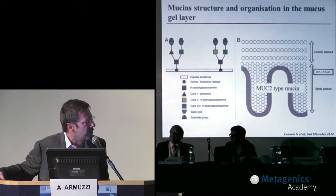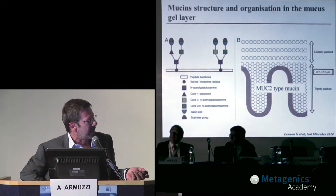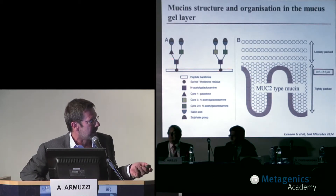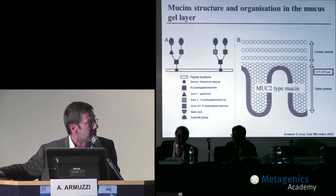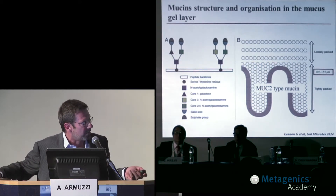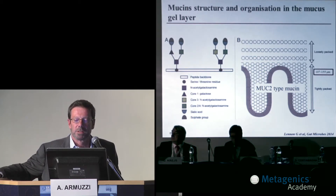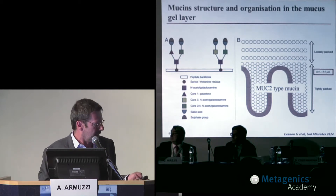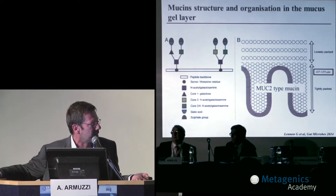The mucin molecule is a peptide backbone on which serine or threonine residues are inserted, and according to elongation of oligosaccharide chains, the mucus chain is constituted. In the colon, the mucus thickness is around 100 microns. The superficial outer part of the mucus is loosely packed, allowing bacteria to penetrate, but in a healthy condition, bacteria are generally not allowed to penetrate the tightly packed inner mucus layer that is in direct contact with the epithelium.